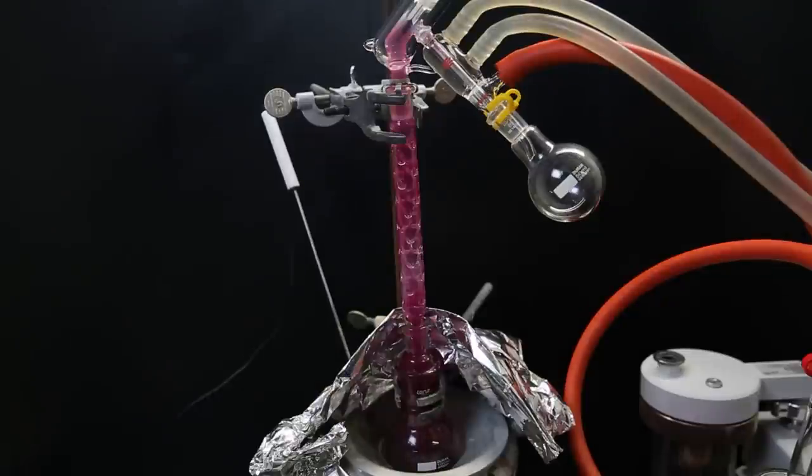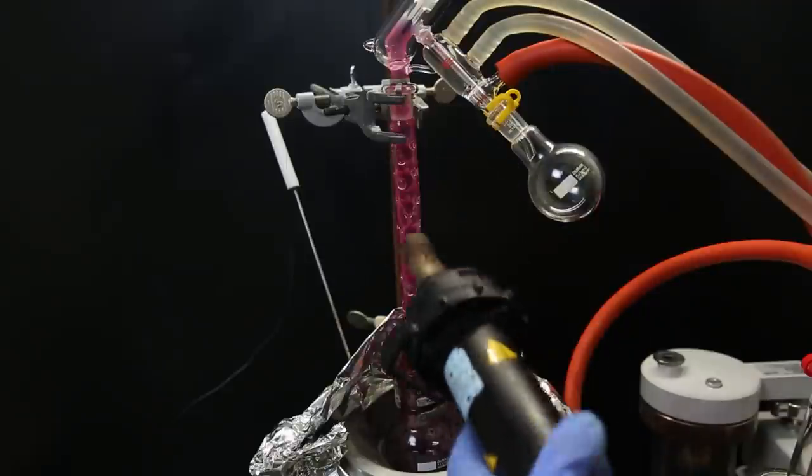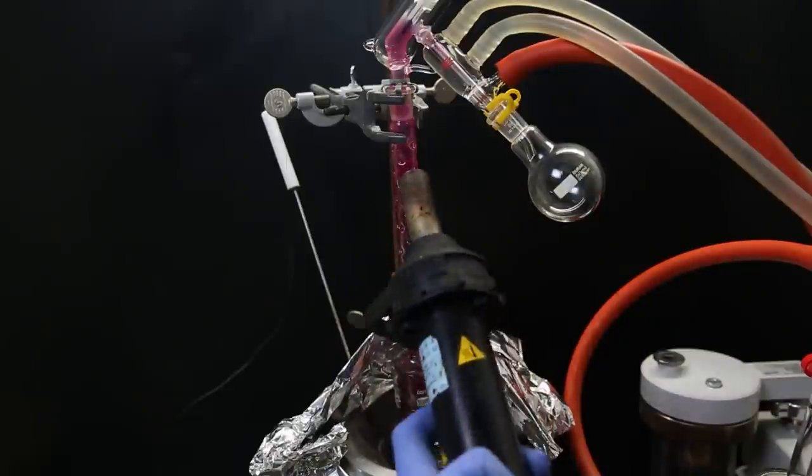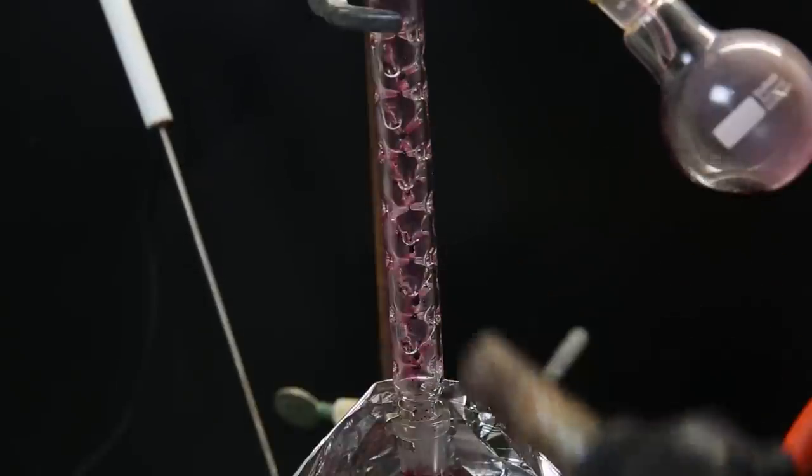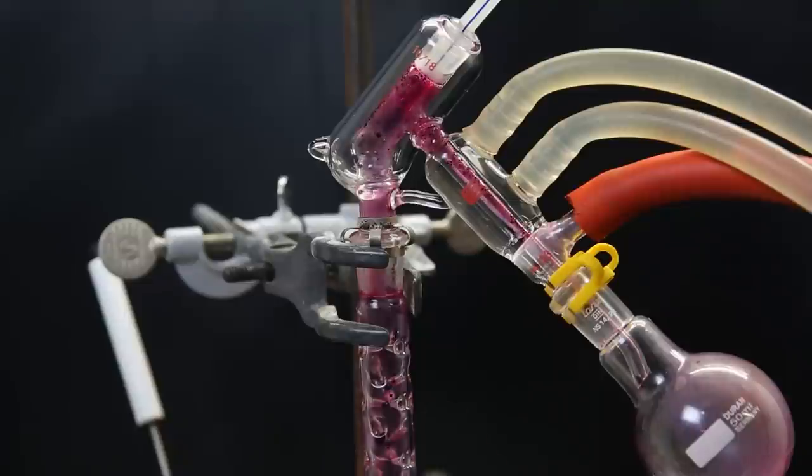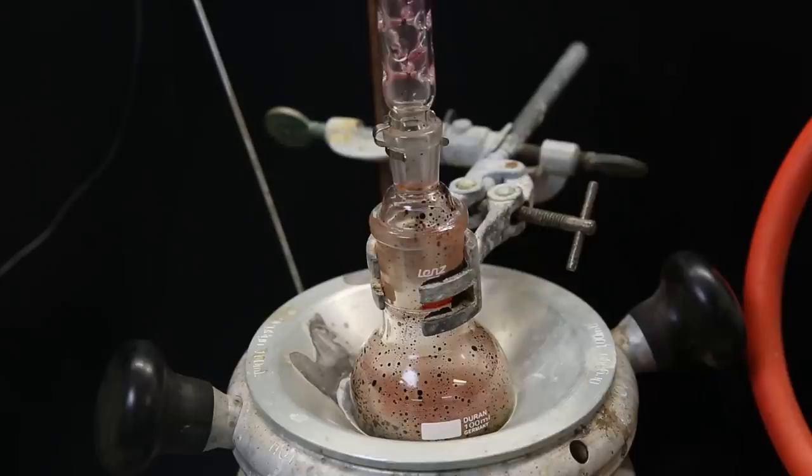After a while, it starts boiling, and a pink-purple condensate is forming in the apparatus. I keep assisting it with a heat gun, and we see the pink thiobenzoyl chloride starts distilling over, and collecting in the receiving flask. When it is done, all that is left in the flask is a bunch of crap.